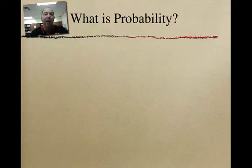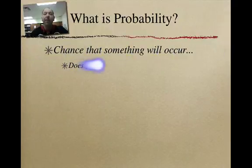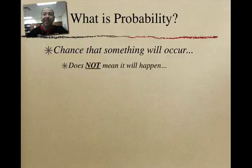So what is probability? Well, probability is the chance that something will occur. It doesn't mean it's necessarily going to happen. A lot of people confuse that. If they say you have a one in four chance of winning, people say, well, I got a 25% chance of winning. Yeah, but you also have a 75% chance of losing.